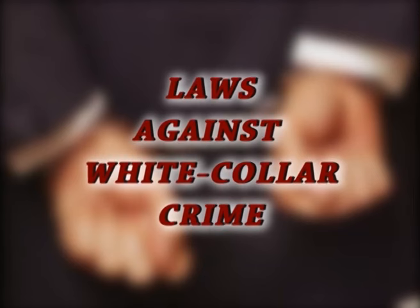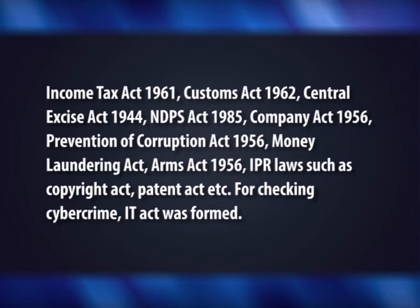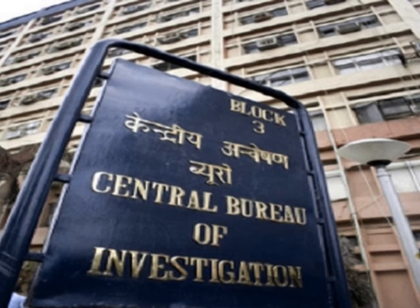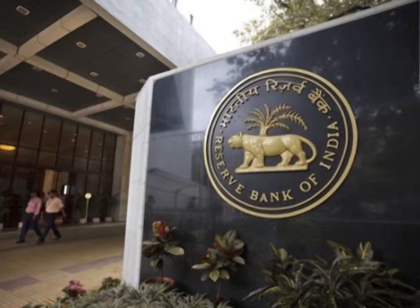There are various acts and legislations in India to control socio-economic offenses: Income Tax Act of 1961, Customs Act of 1962, Central Excise Act of 1944, NDPS Act of 1985, Companies Act of 1956, Prevention of Corruption Act of 1956, Money Laundering Act, Arms Act of 1959, IPR laws such as Copyright Act, Patent Act, etc. For checking cyber crime, the IT Act was formed. Agencies like CBI, Income Tax, RBI, Lok Ayukta, etc. are present to keep a check on white collar crimes.